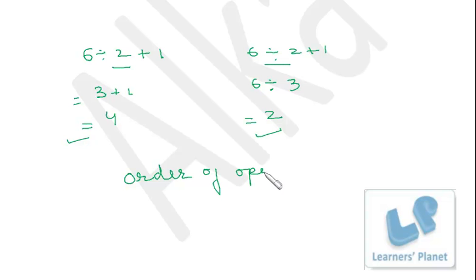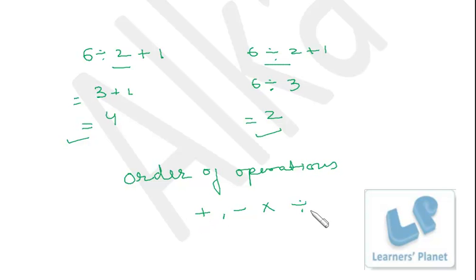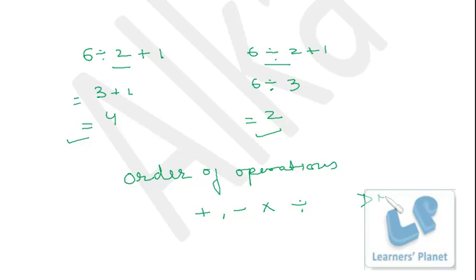Order of operations. Now what are operations? Operations are addition, subtraction, multiplication, and division — these are the four basic operations in mathematics. What should be the order of performing these operations? That is actually important, and because of that we are going to study this topic: order of operations and D-M-A-S.